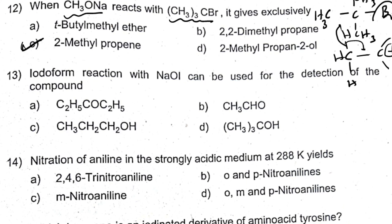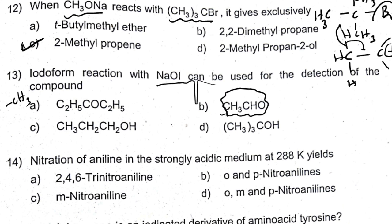The iodoform reaction with NaOI can be used for the detection of certain compounds. The iodoform test is mainly used for compounds with a CH₃CO- group. In aldehydes, only acetaldehyde can give this test. Acetaldehyde can give the iodoform test — this is the answer.